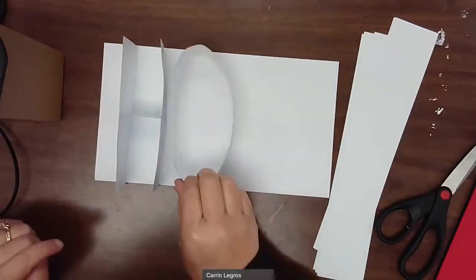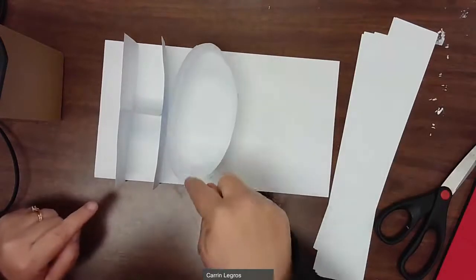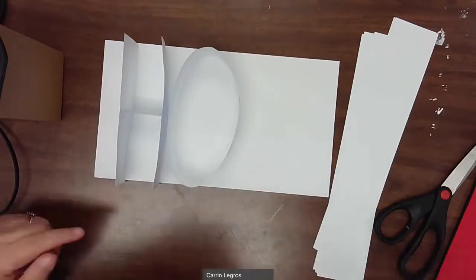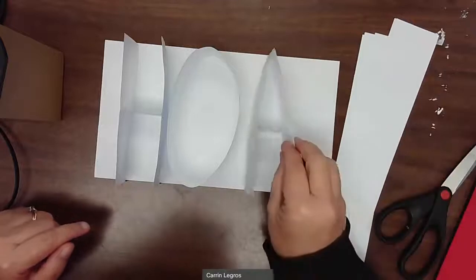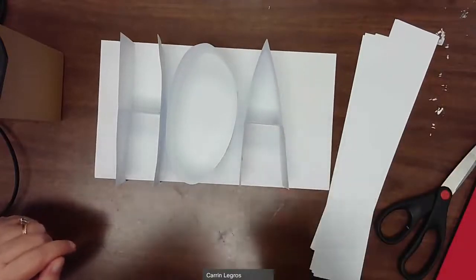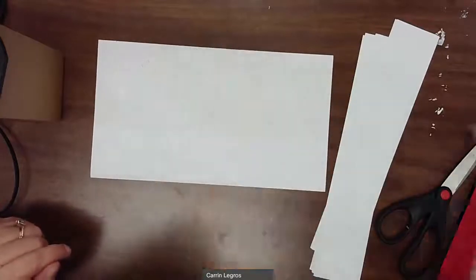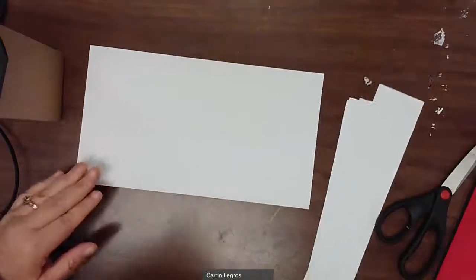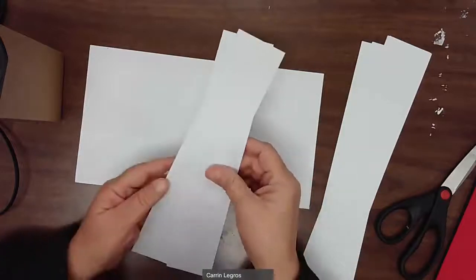I made an O also with two strips of paper and you see I'm using my template. So I want the letters to be the height. I also made an A and I'm just about ready to make an X. So problem solving is definitely part of this activity.